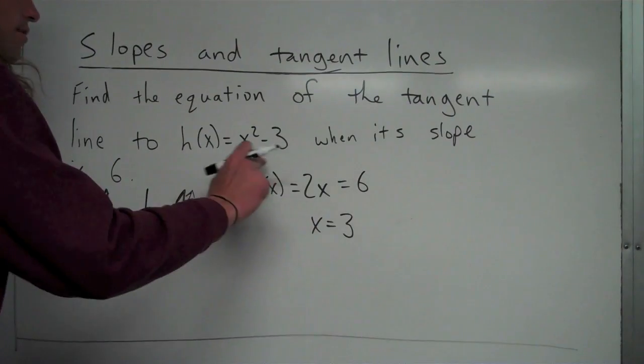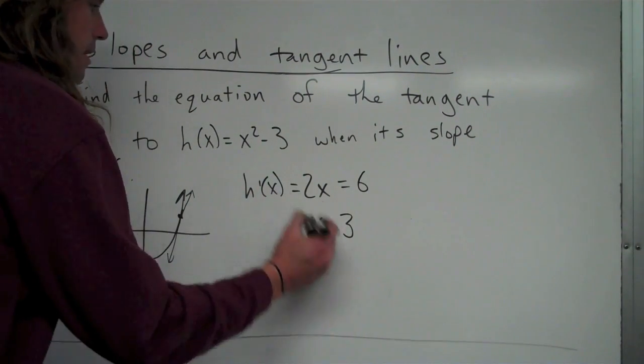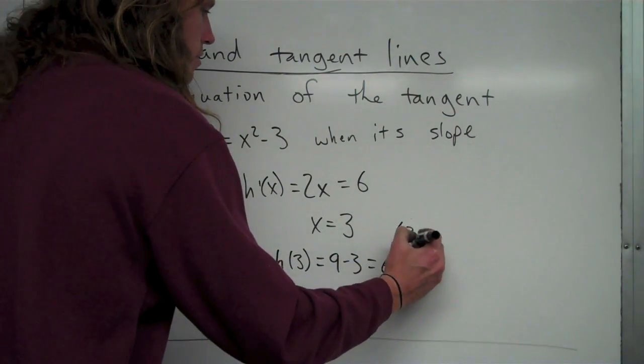To figure out the y value, I'm going to take 3 and plug it back into my original function. So I'll end up getting 9 minus 3, which is equal to 6. So my point is (3, 6).